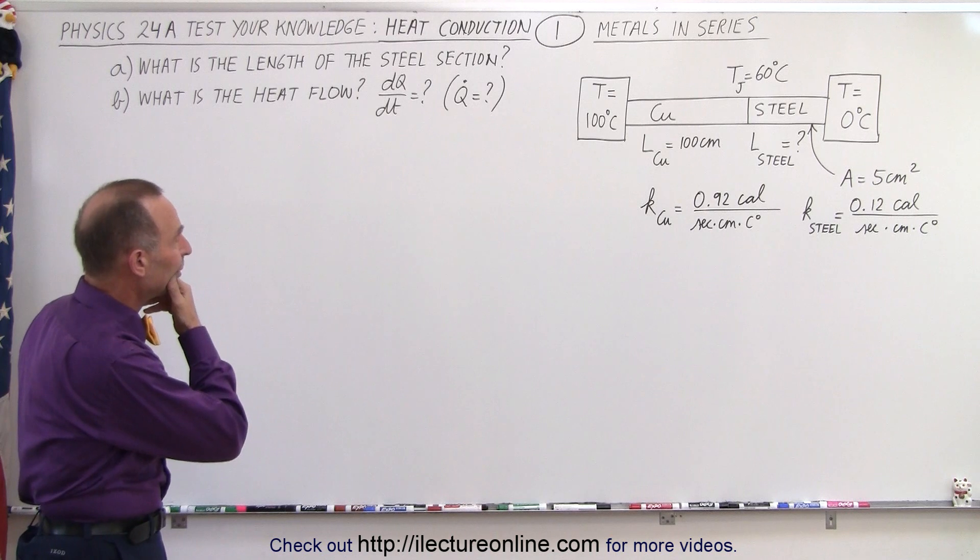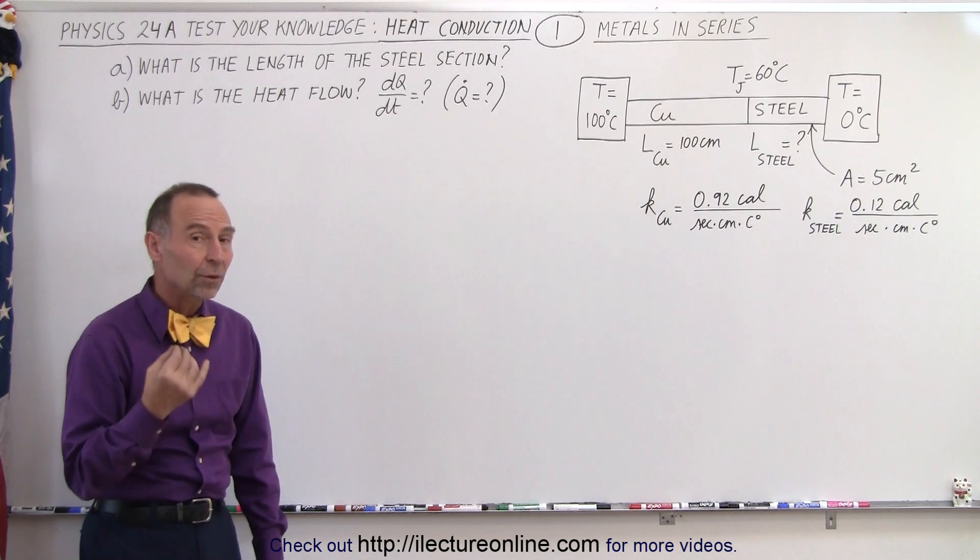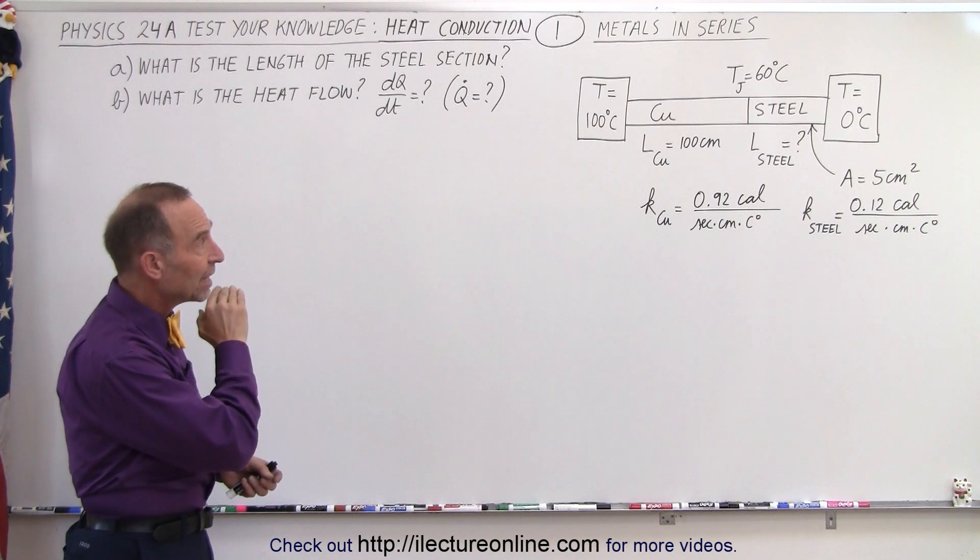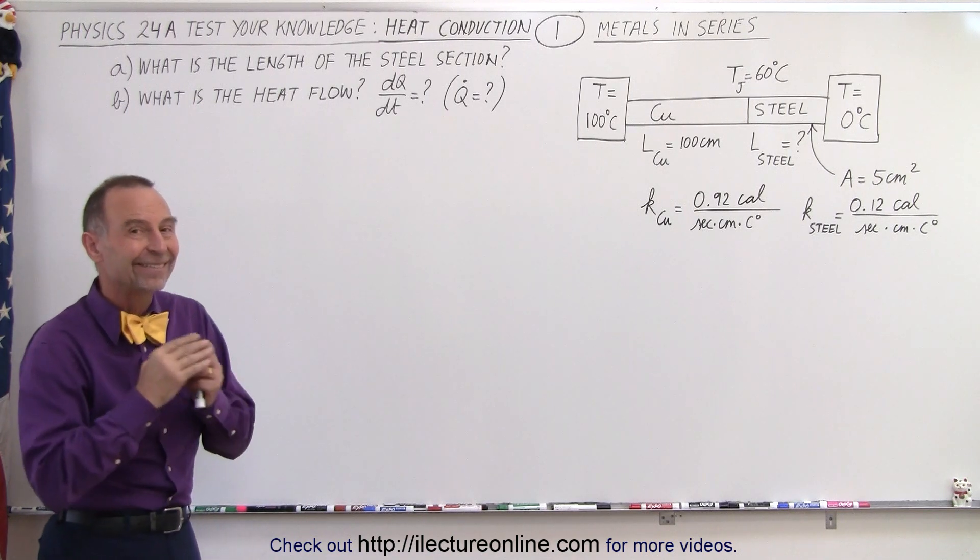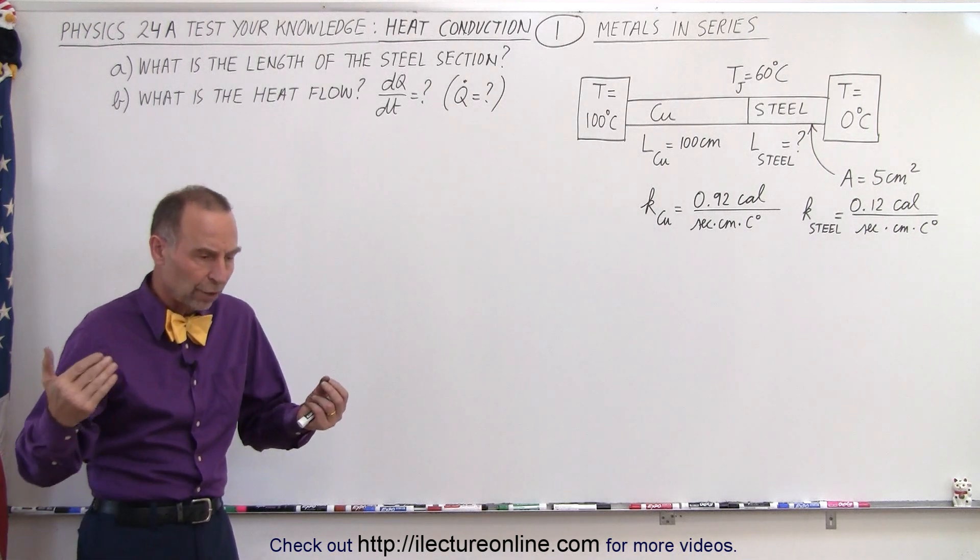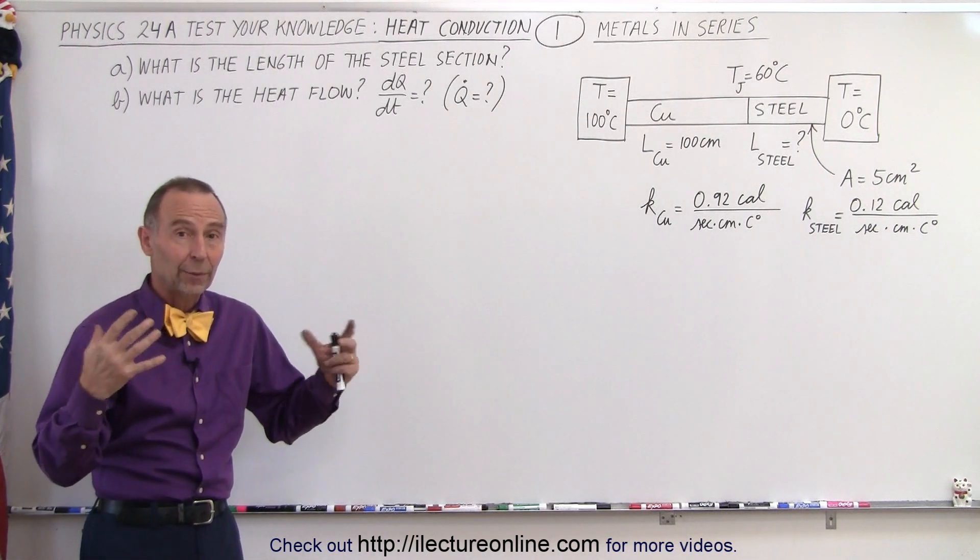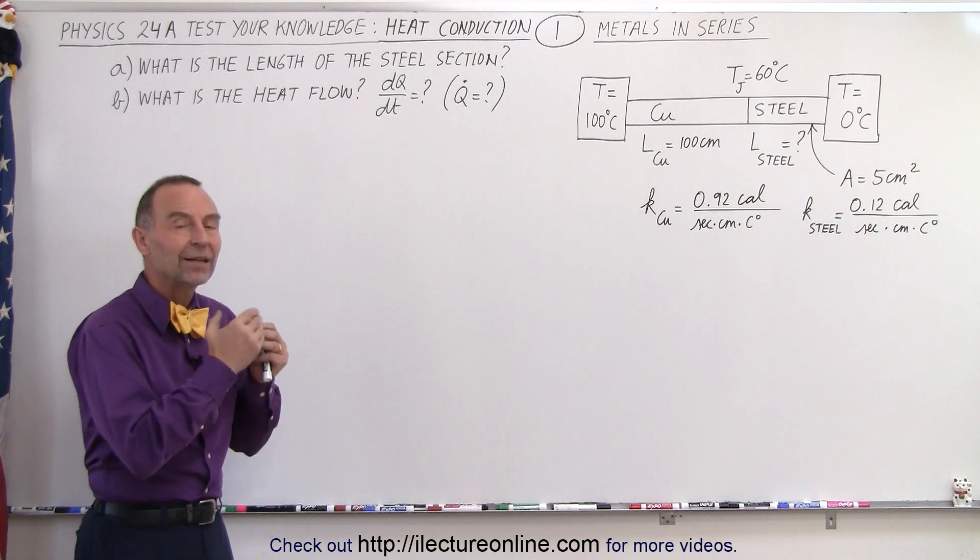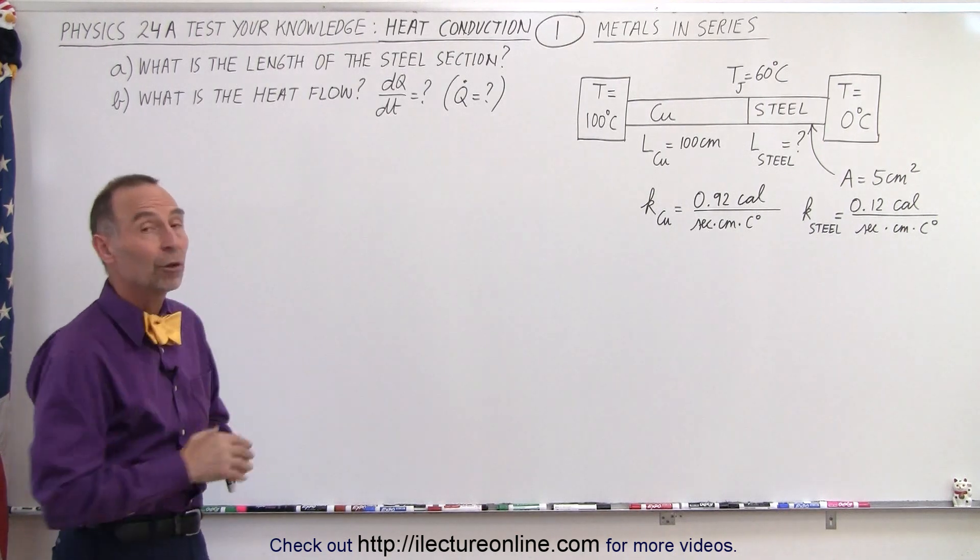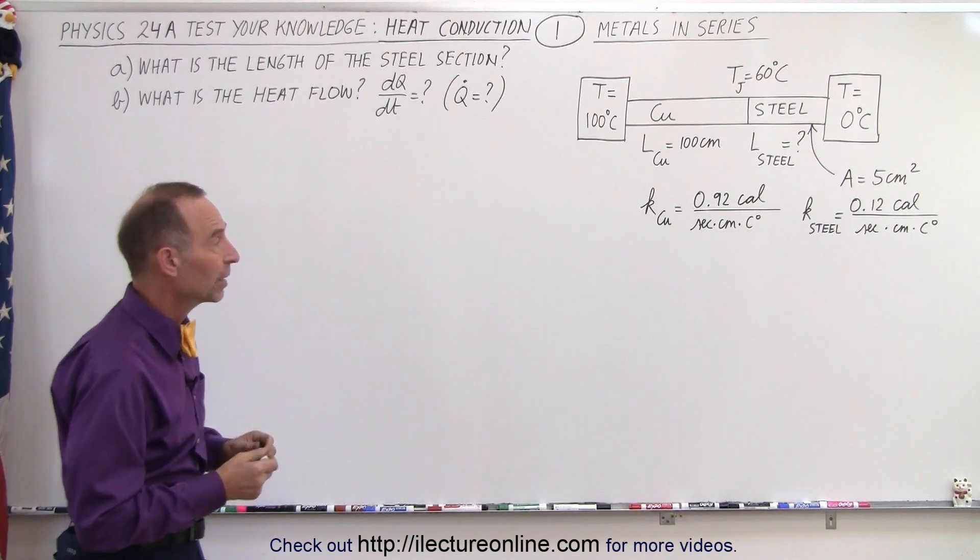So how do we solve a problem like that? Well the key to understanding and solving the problem is realizing that the amount of heat flowing through the copper section is exactly the same as the amount of heat flowing through the steel section. The amount of heat flowing through these two metals must be a constant.